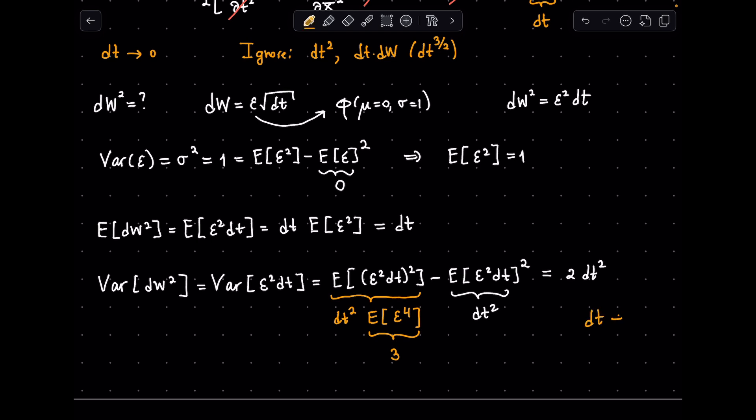But remember that if dt is going to 0, then dt squared is going to go to 0 much faster than that. So we can say that the variance or fluctuations of dw squared is going to be negligible, and it becomes a non-stochastic process. In other words, we can treat it as an ordinary variable and simply use its expected value, which is dt in the total derivative.